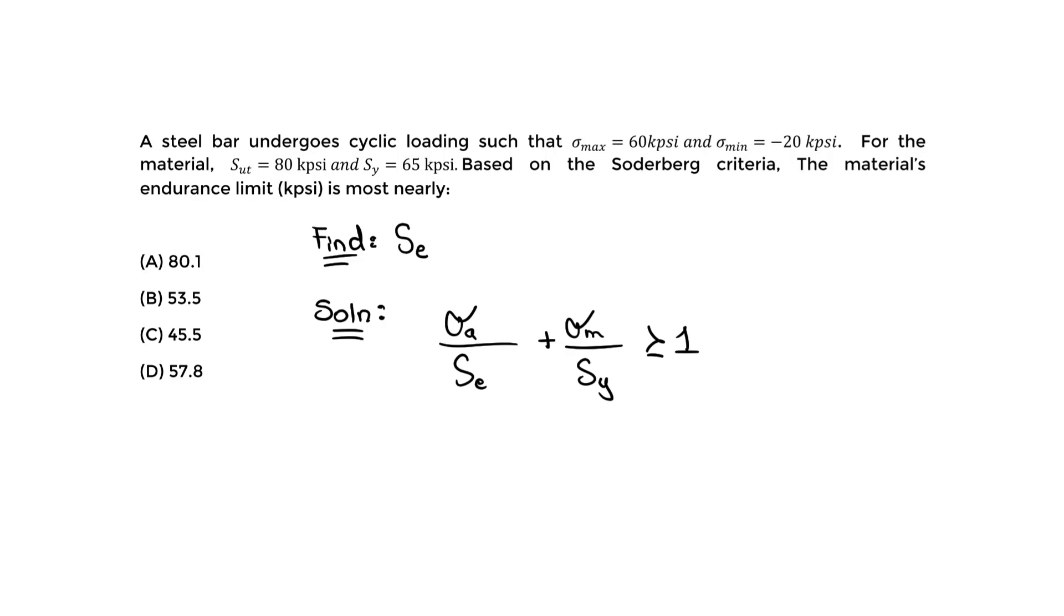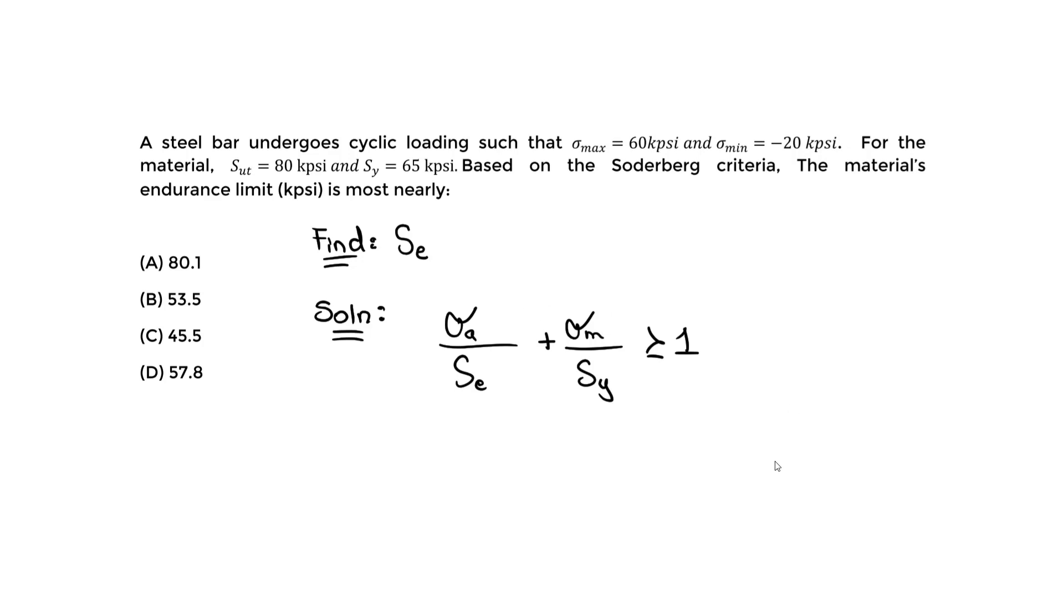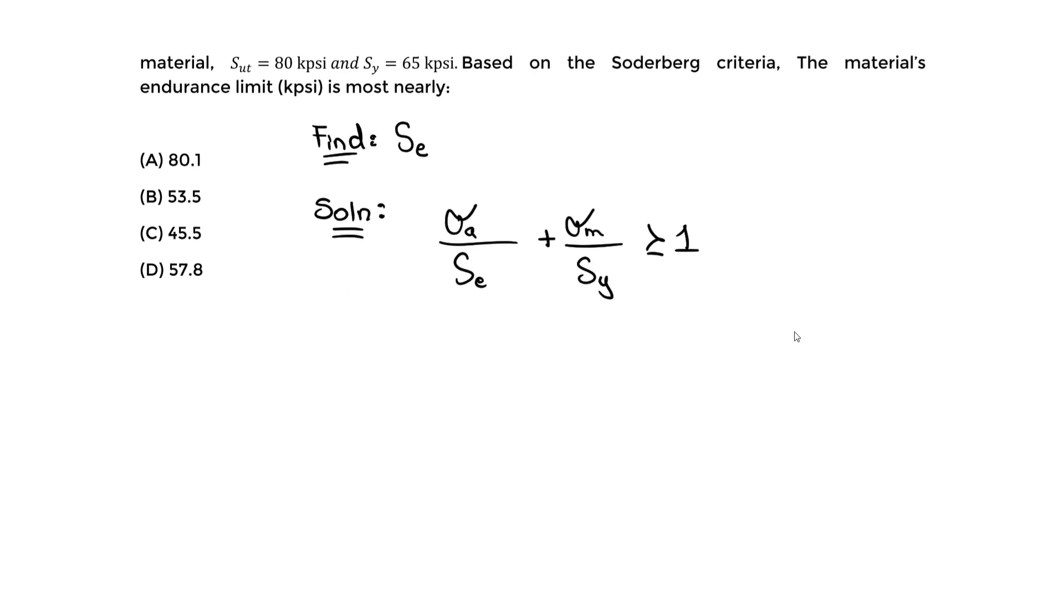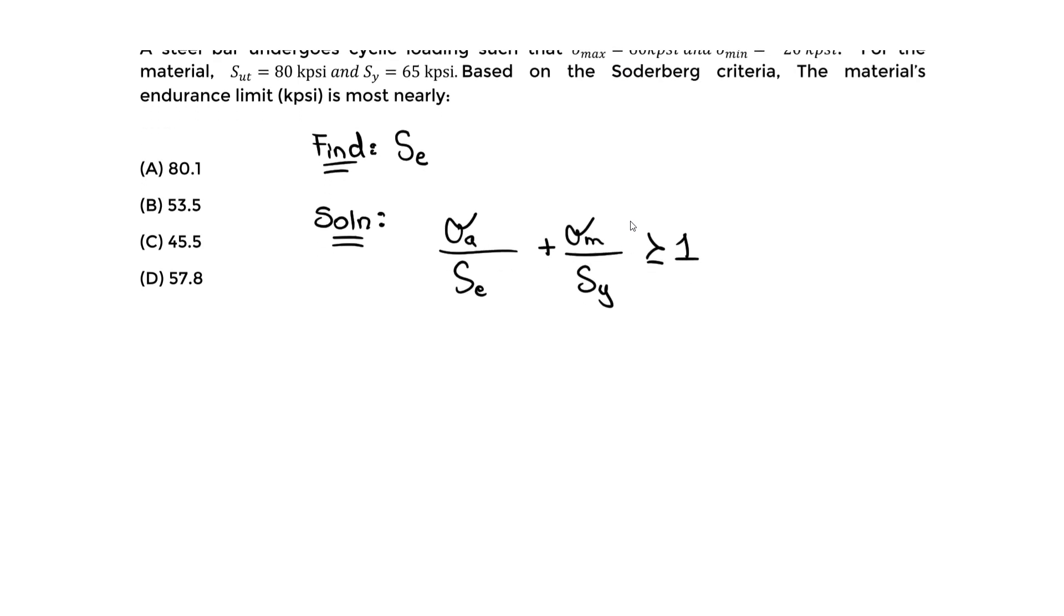We need sigma_a and sigma_m. SE is what we're looking for, S_y is given. We're not going to use S ultimate—that's just extra in this case. But the tricky part is finding sigma_a and sigma_m. The handbook doesn't show us how to find it; they expect us to know.